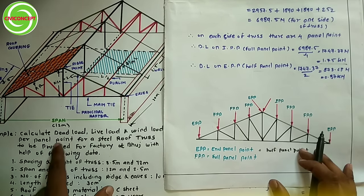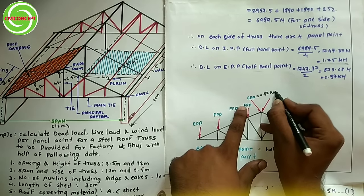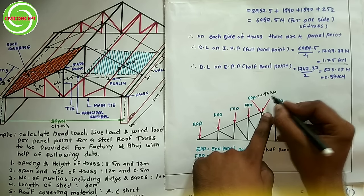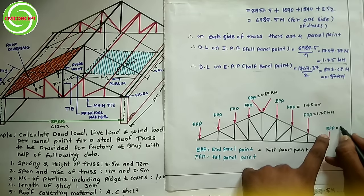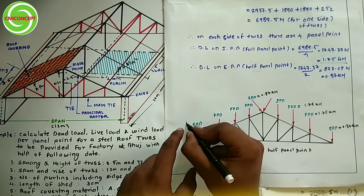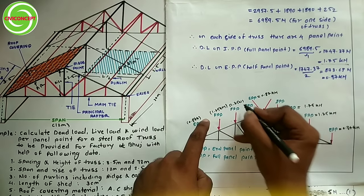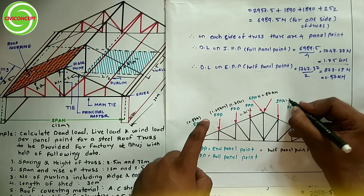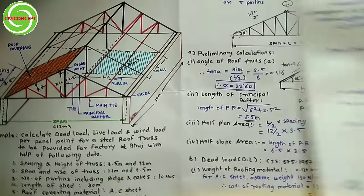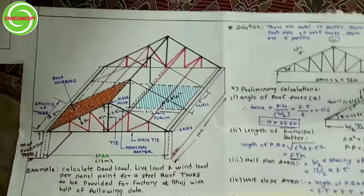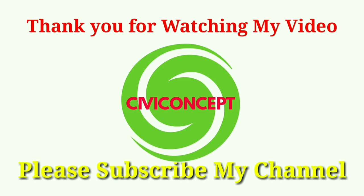So the dead load per panel point: end panel points = 0.87 kN, intermediate (full) panel points = 1.75 kN each. This completes the dead load calculation per panel point for the steel roof truss. If you like my video, please subscribe to my channel CV Concept and share it. Thank you for watching.